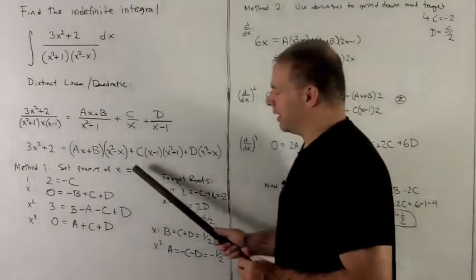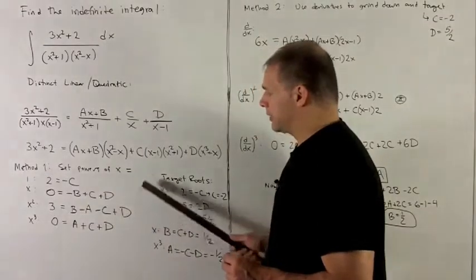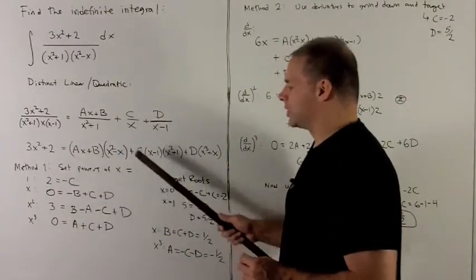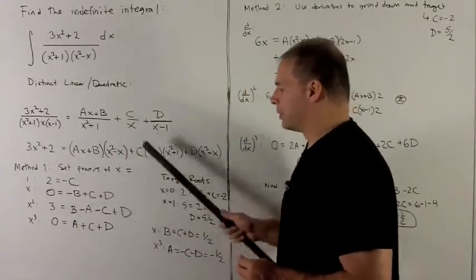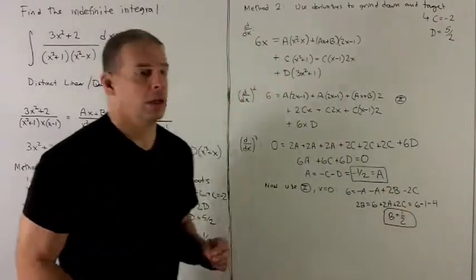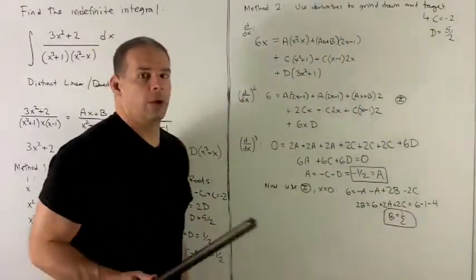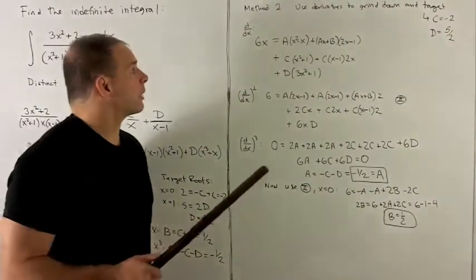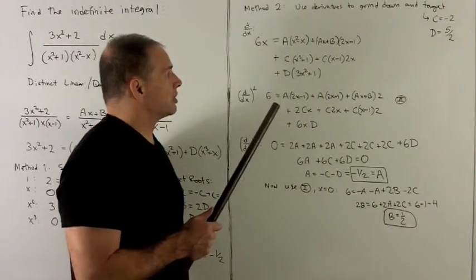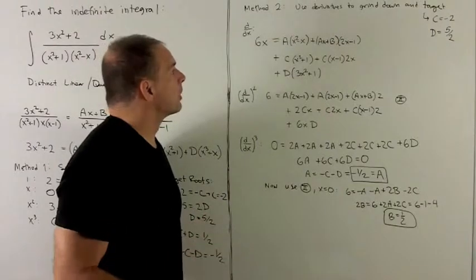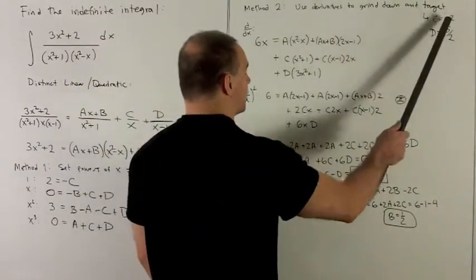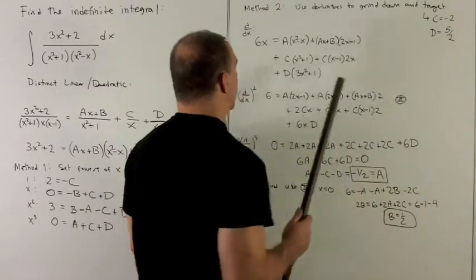The only problem with Method 1 is that if these four equations have a lot more terms, it may not be reasonable to work out. For Method 2, we use derivatives to grind down the equations and then target roots. We again get c = −2 and d = 5/2.